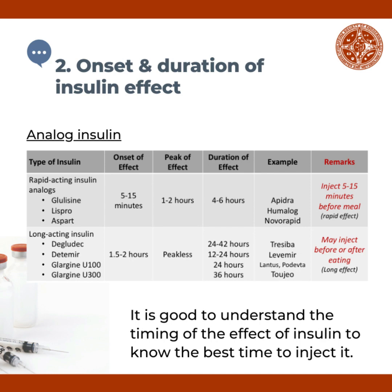For long-acting insulin analogs, the onset of effect is at 1.5 to 2 hours and these are peakless. For insulin degludec or Tresiba, the duration of effect is 24 to 42 hours. For insulin detemir or Levemir, it is 12 to 24 hours. For insulin glargine U100 or Lantus and Toujeo, it is 24 hours, and for insulin glargine U300 or Toujeo it is 36 hours. All long-acting insulins may be injected before or after eating.